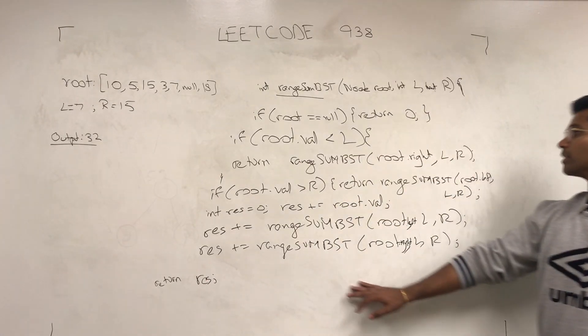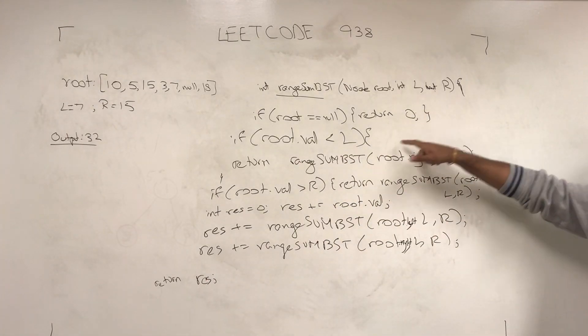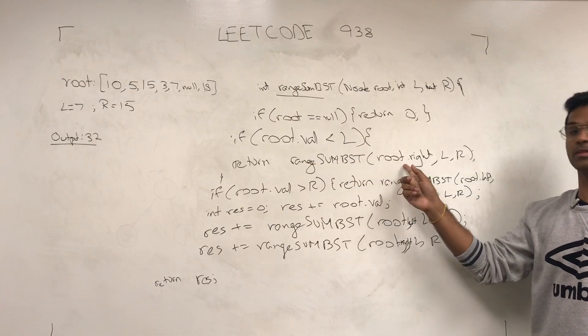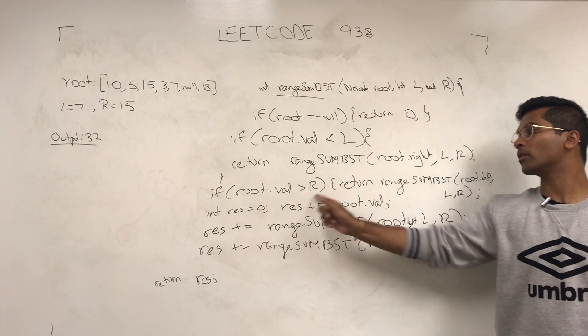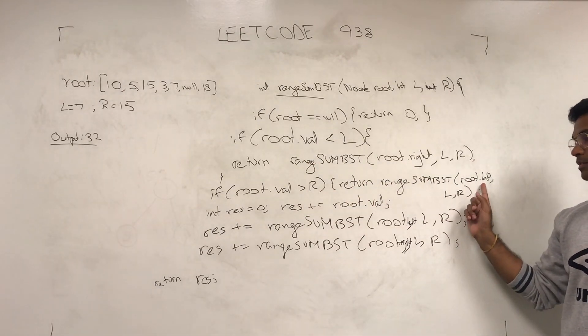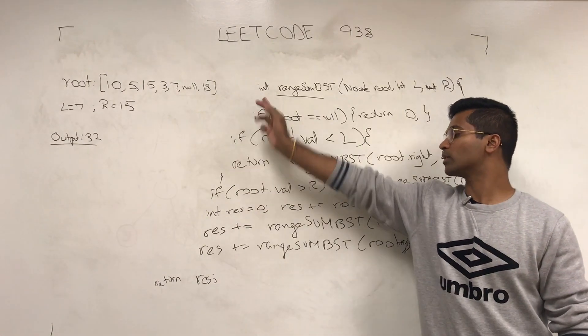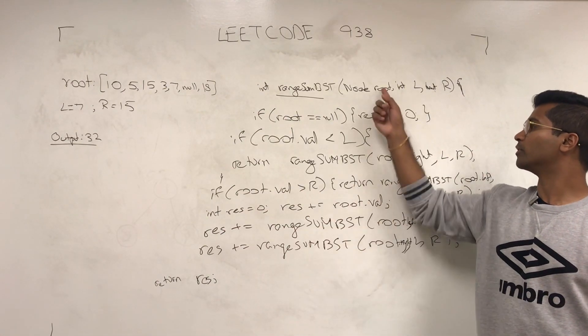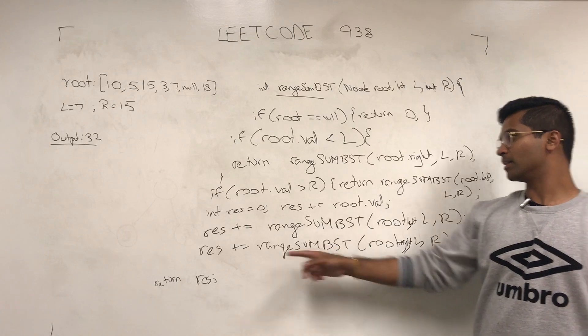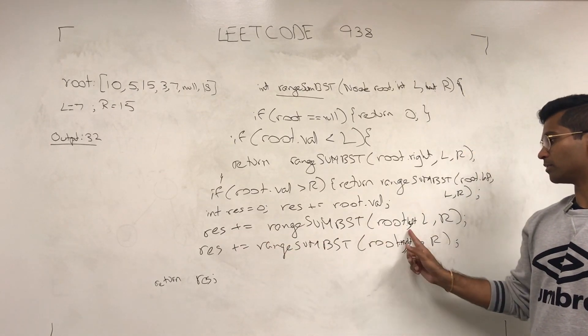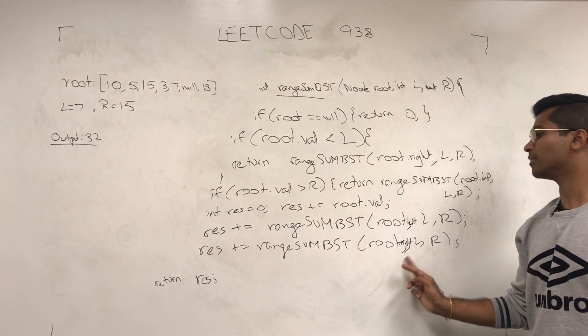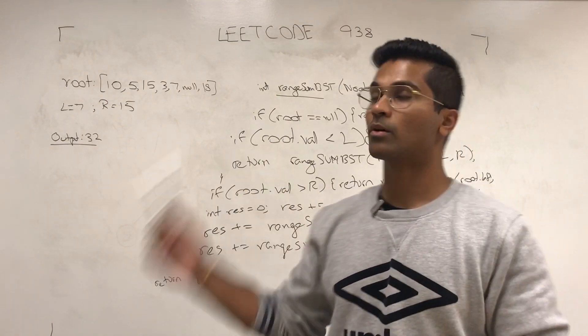So let's take a look at that. If the root is null, return zero. If the root's value is too little, go for something bigger. If the root's value is too large, go for something smaller on the left side. Initialize res, because that's what they want. Increment res by the value, because it's not null. Then res is incremented by the left child, and res is incremented by the right child, and return res. That's pretty much how you solve this problem.